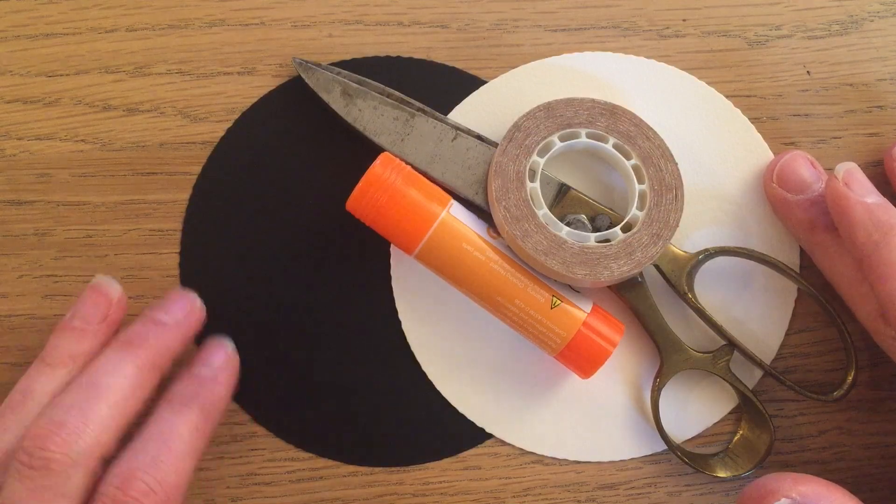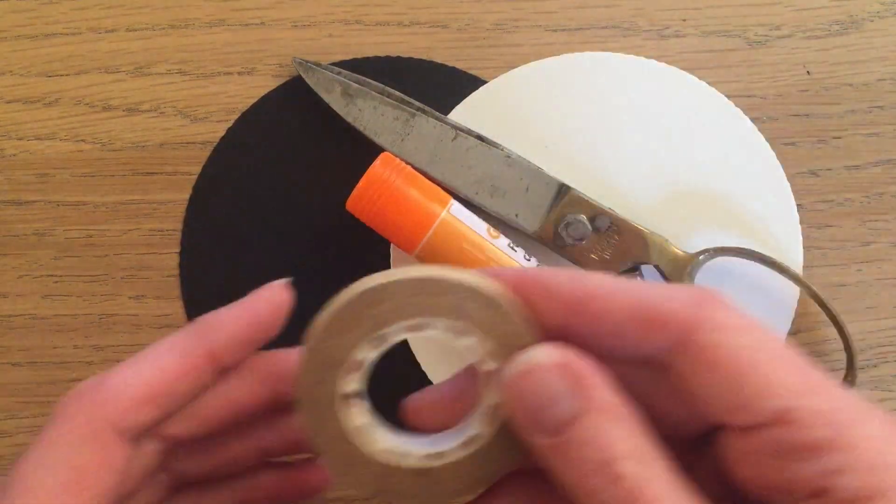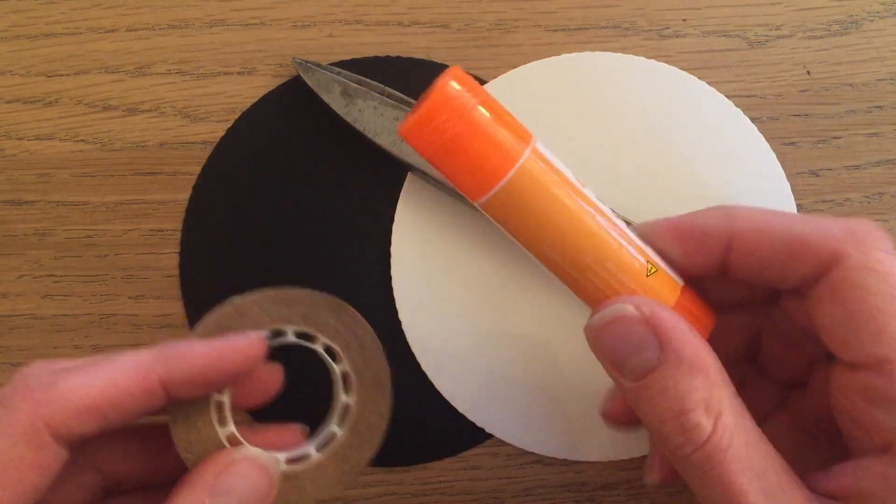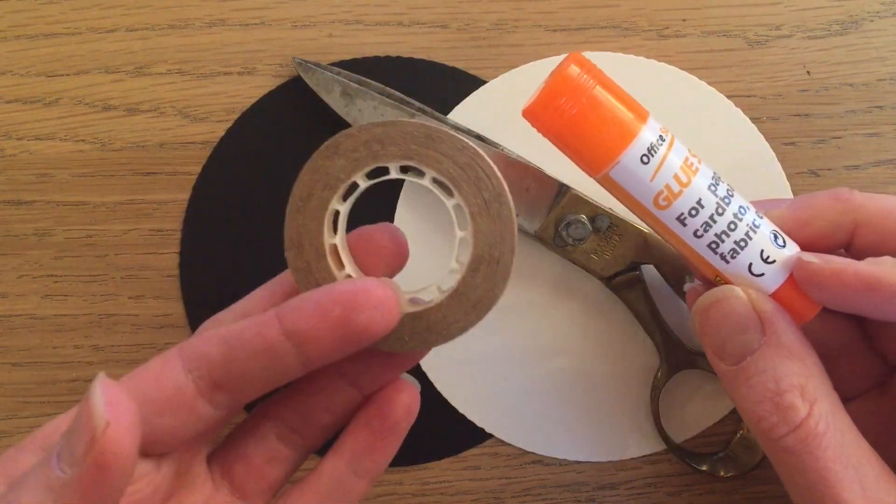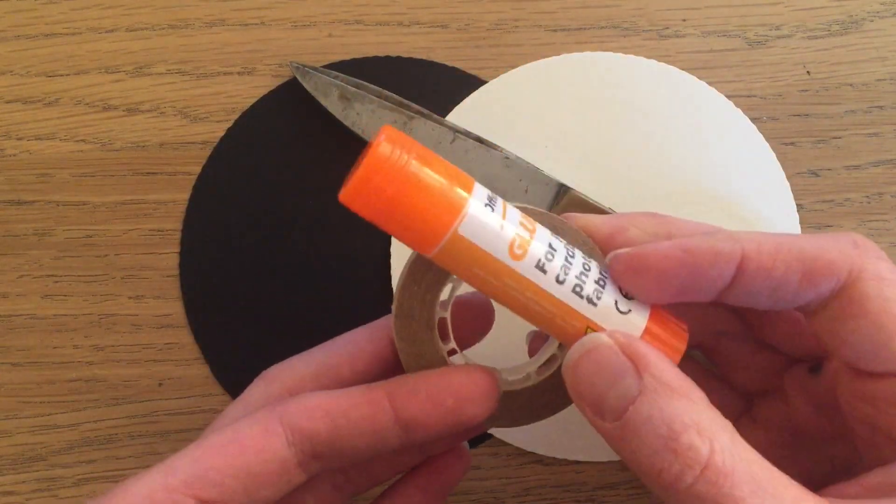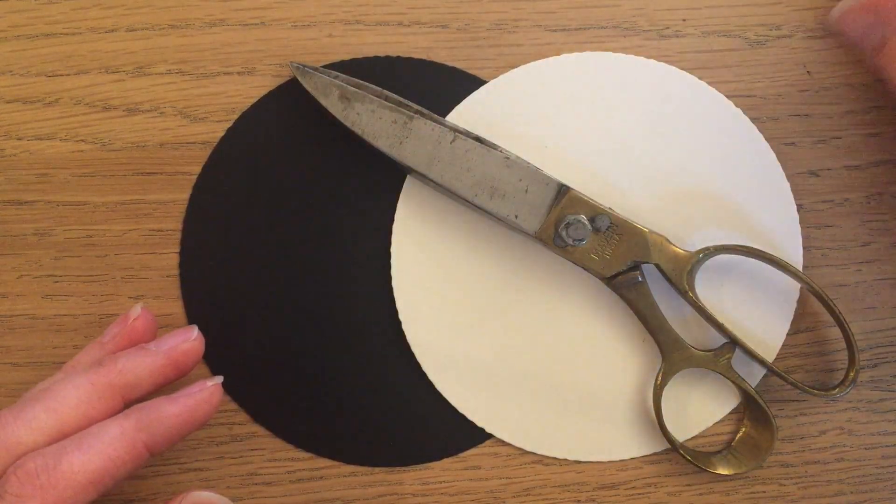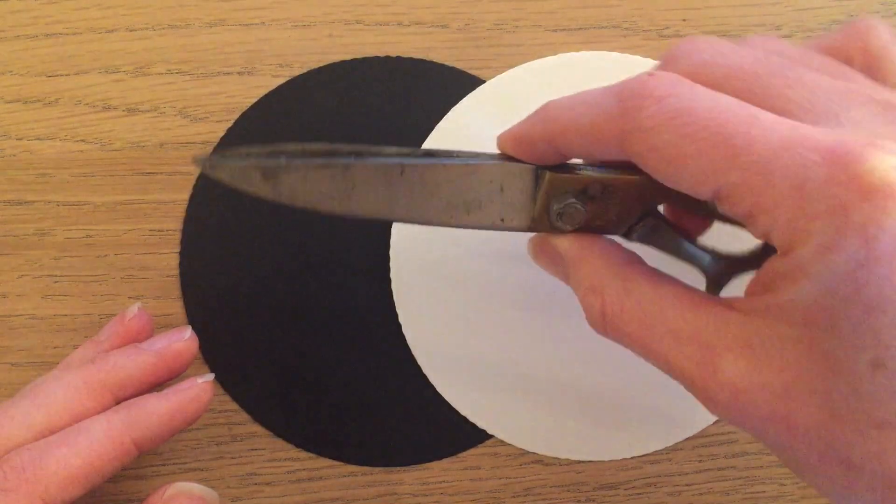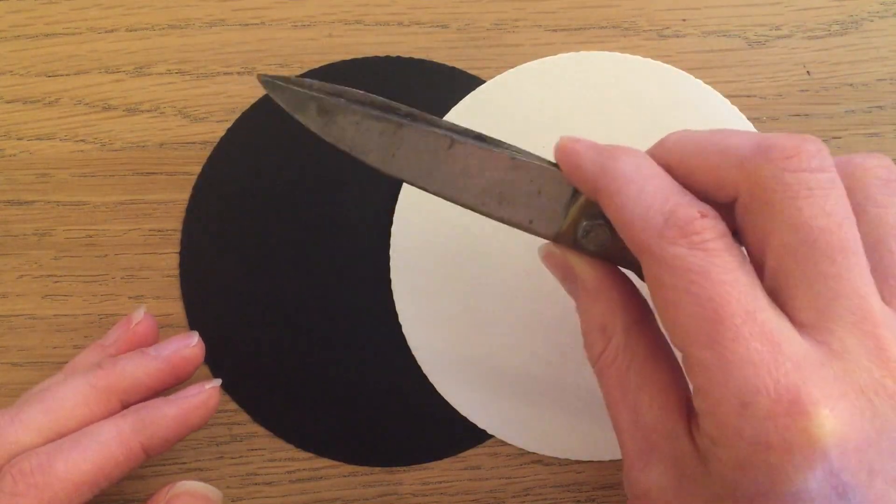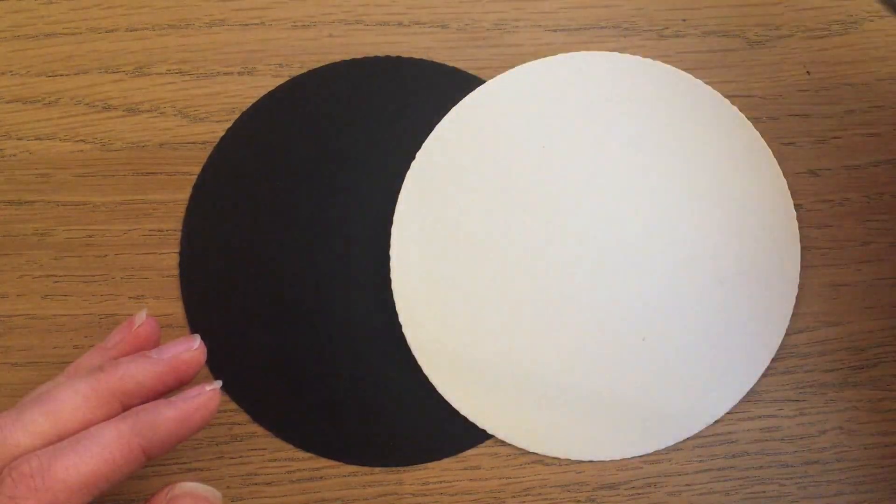What you're going to need right now is some sort of sticking agent. I'm going to use a regular old glue stick, but if you have some double stick tape that would also work. You're also going to need a regular pair of scissors, obviously not in our project pack, but you're going to need a pair of scissors, any kind will do.